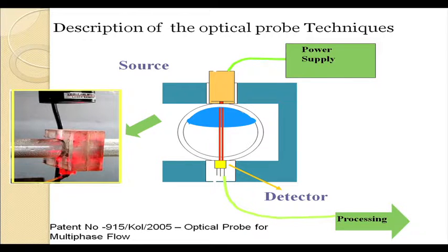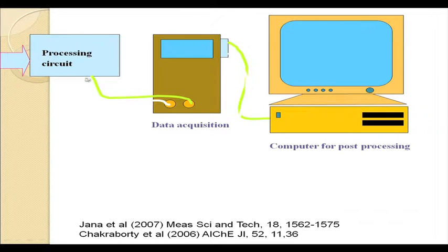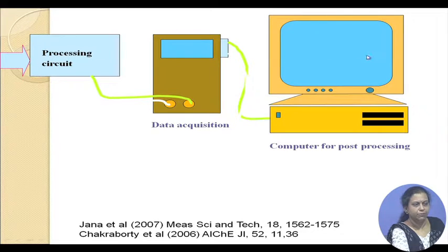The optical probe is a very simple system, and it has been patented. It has a laser source at one end and a detector on the opposite side. The source sends a small amount of light via laser beam through the test section. A photodiode sensor at the other end, when it receives light, converts it into a voltage signal. This voltage signal is sent to a processing circuit for data acquisition and gives a continuous voltage-time signal on the computer screen, by means of which we can understand the flow distribution.